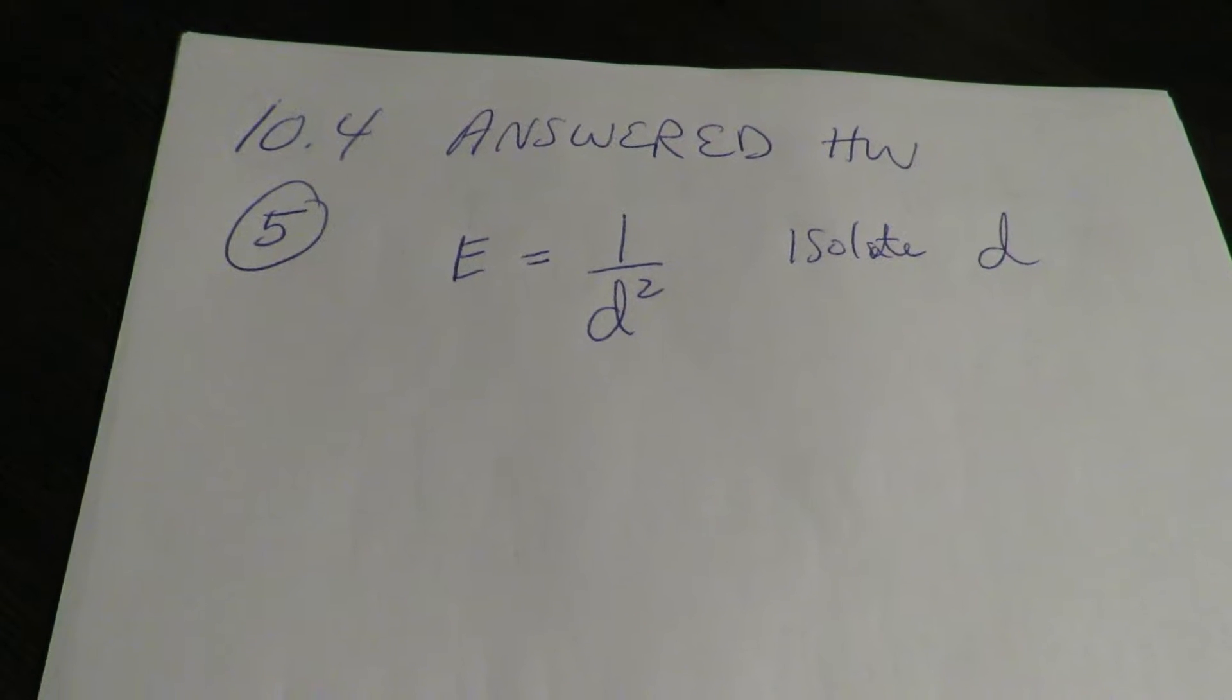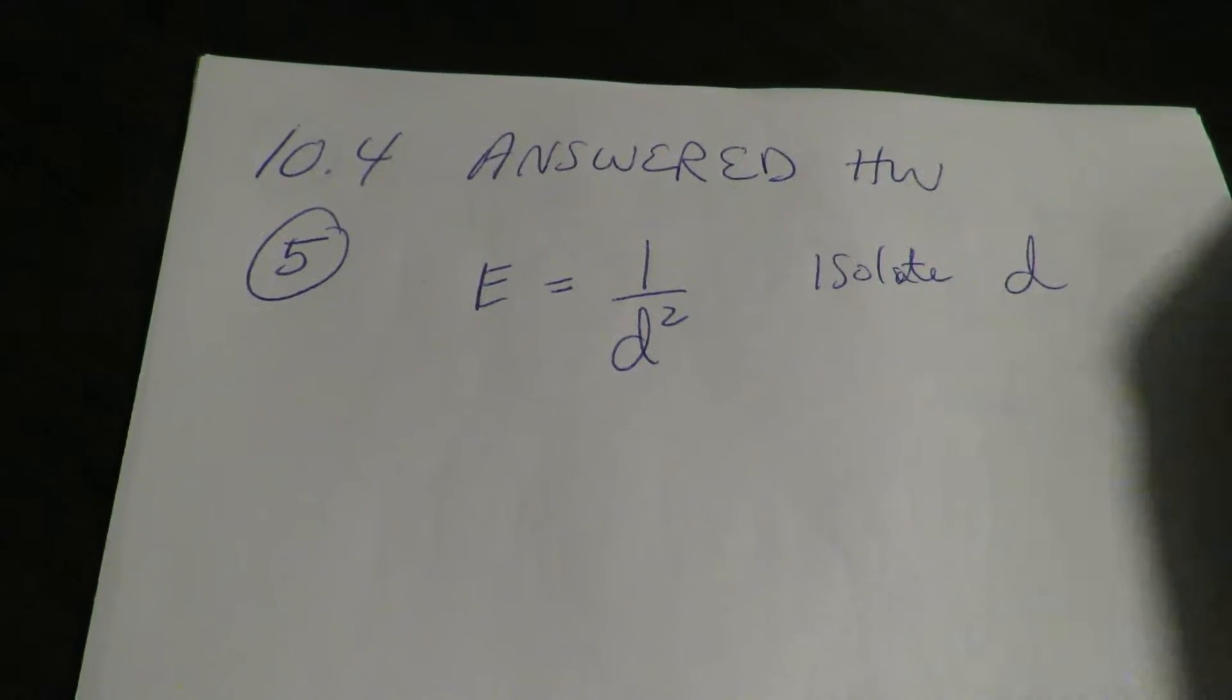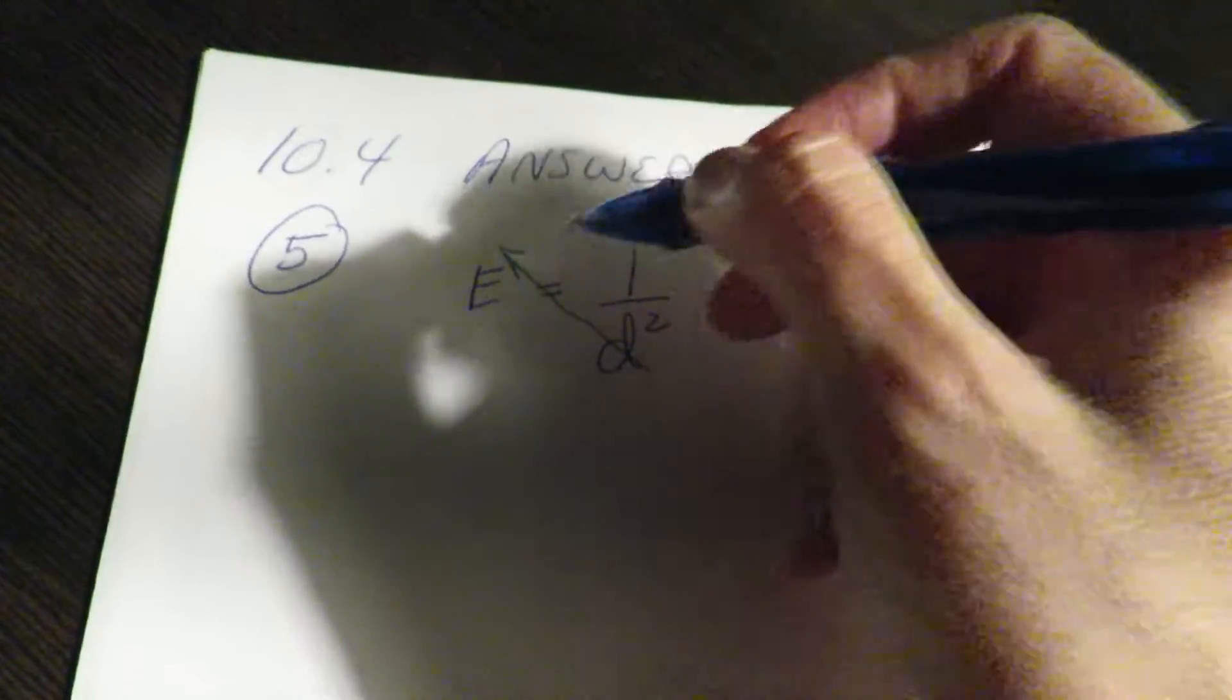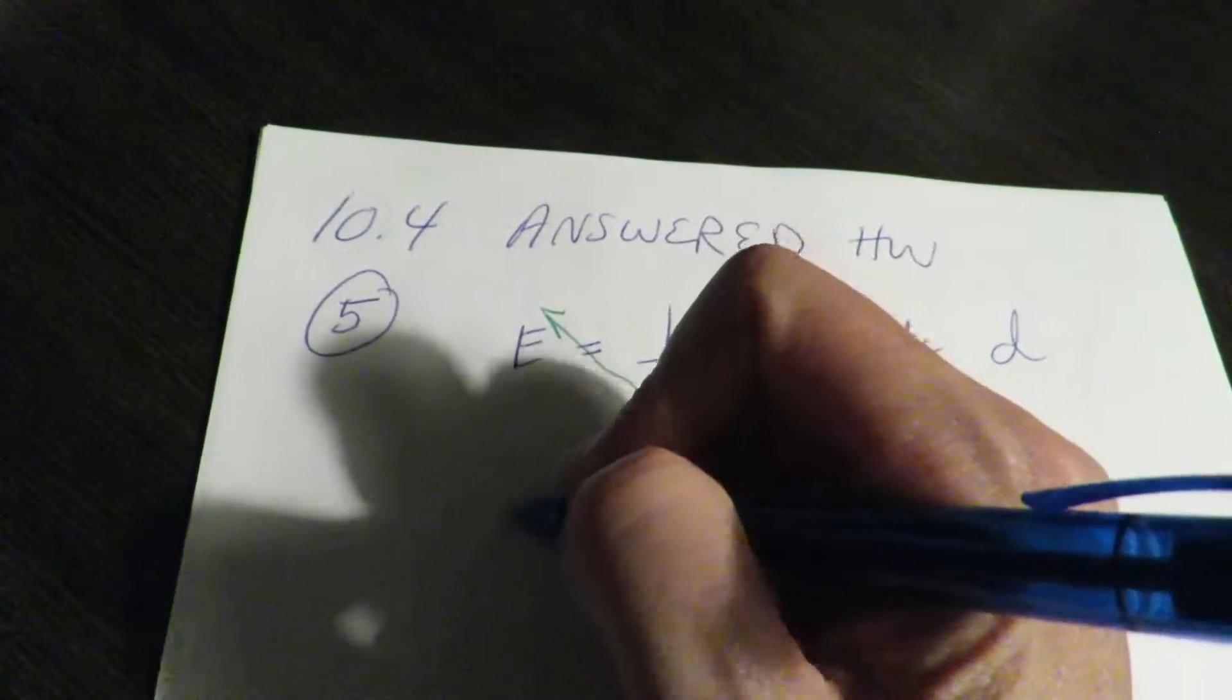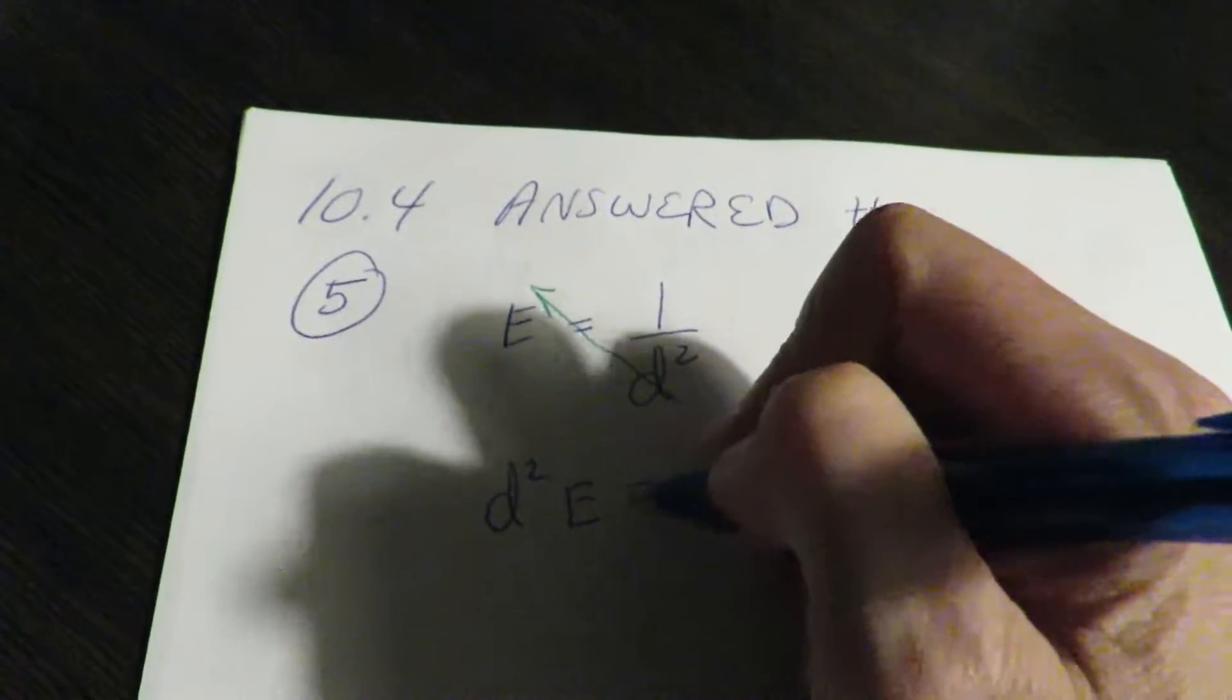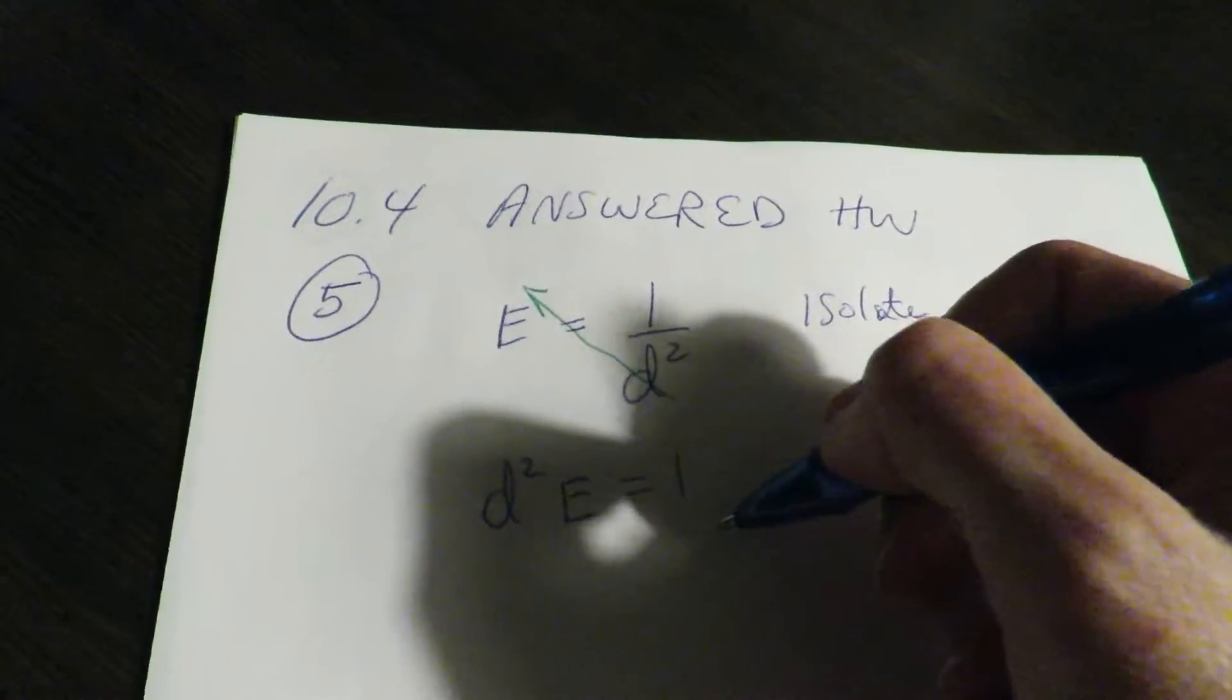Either you can use the LCD to get them to have the same denominator and then cross out the denominator, or you can just cross multiply here for starters. If you're really comfortable with fractions, you know you could just flip these. I'm bringing the d up, I'm going to divide the e down.